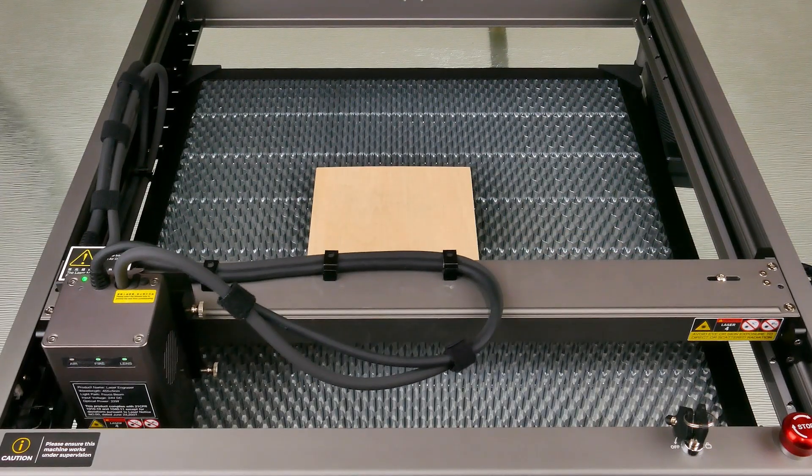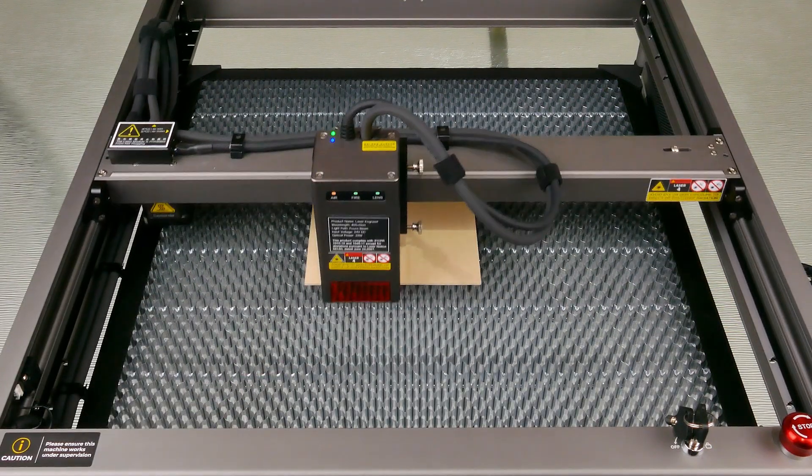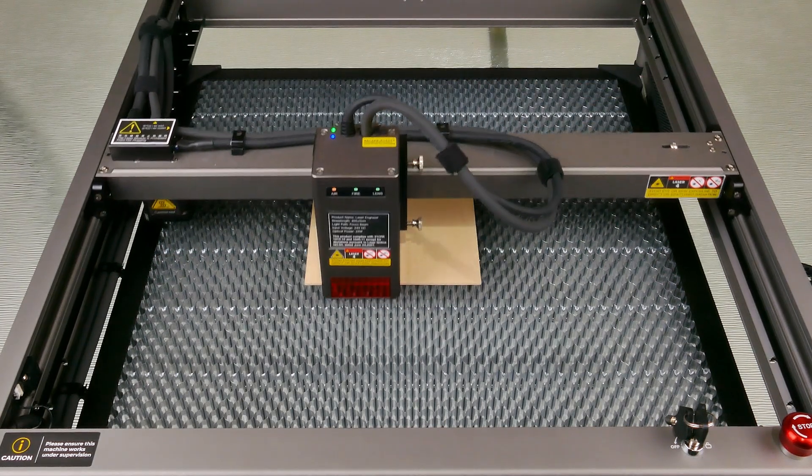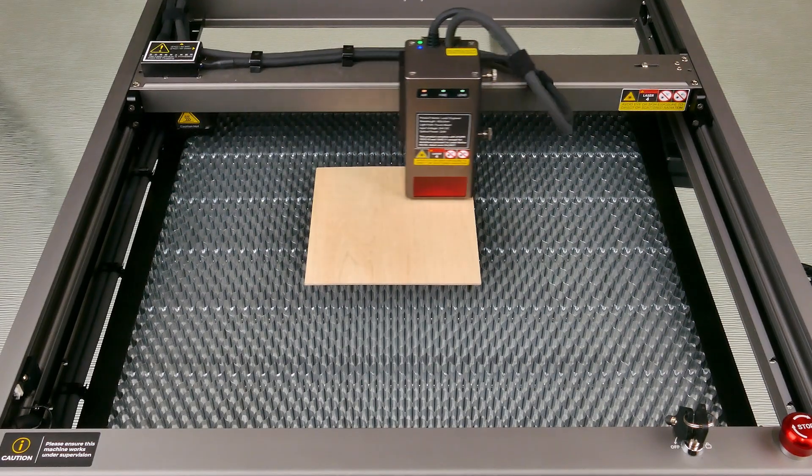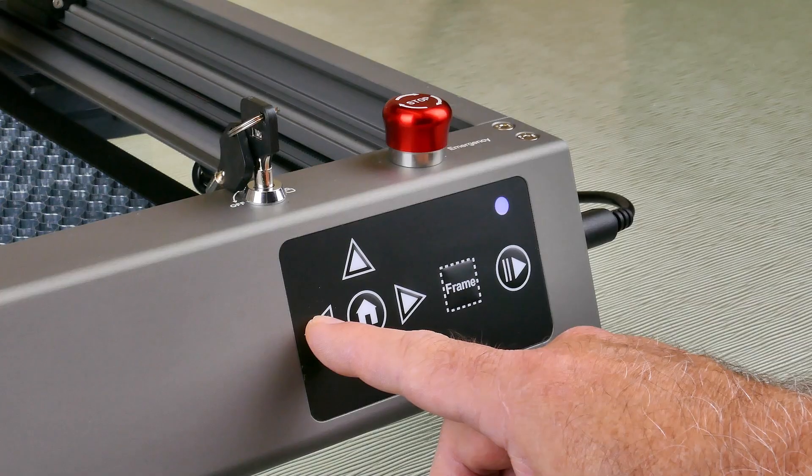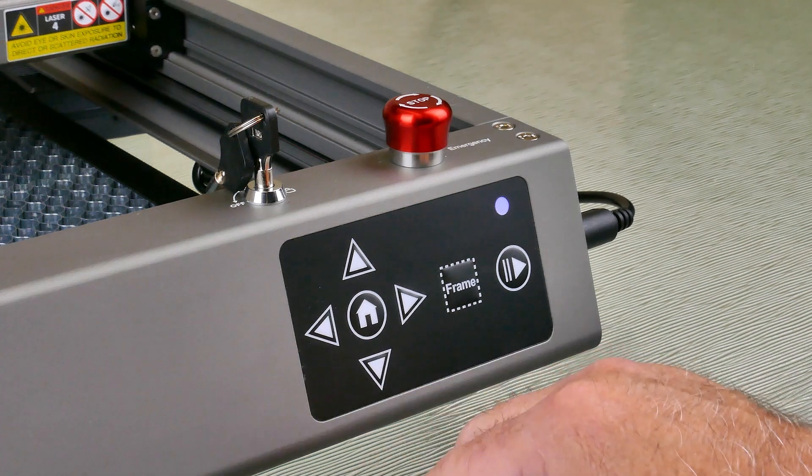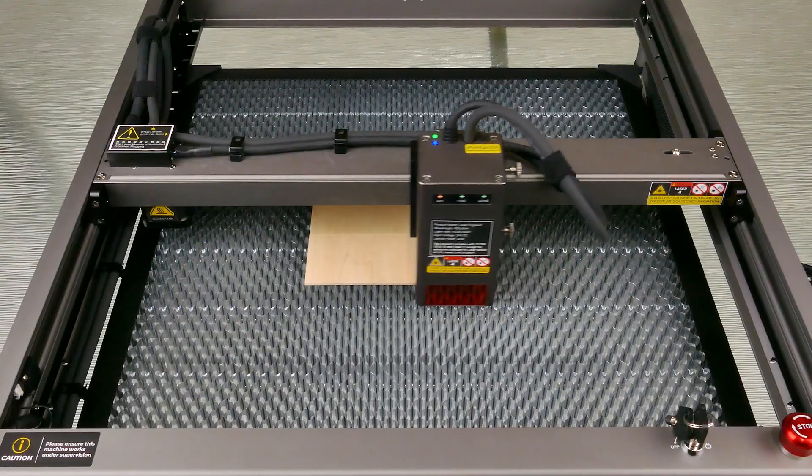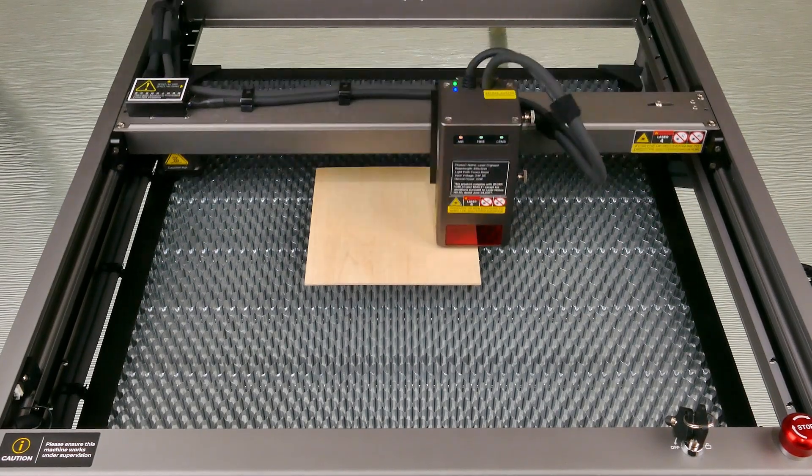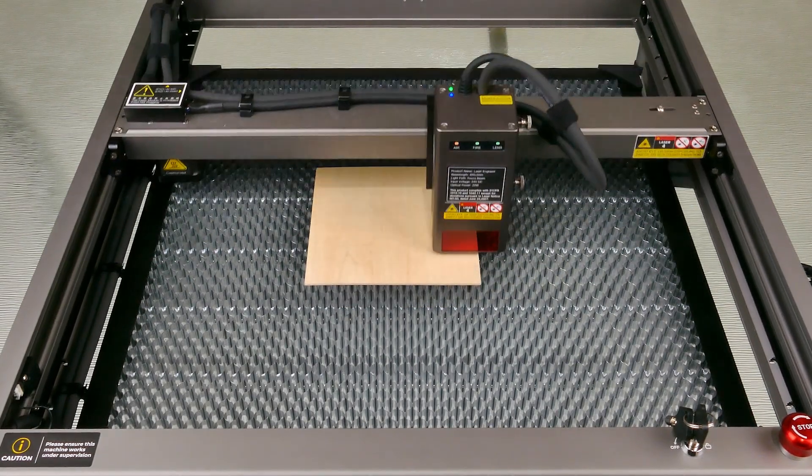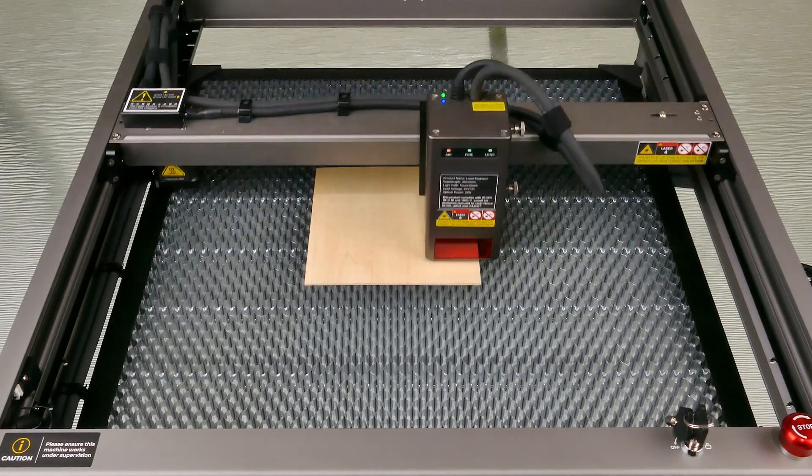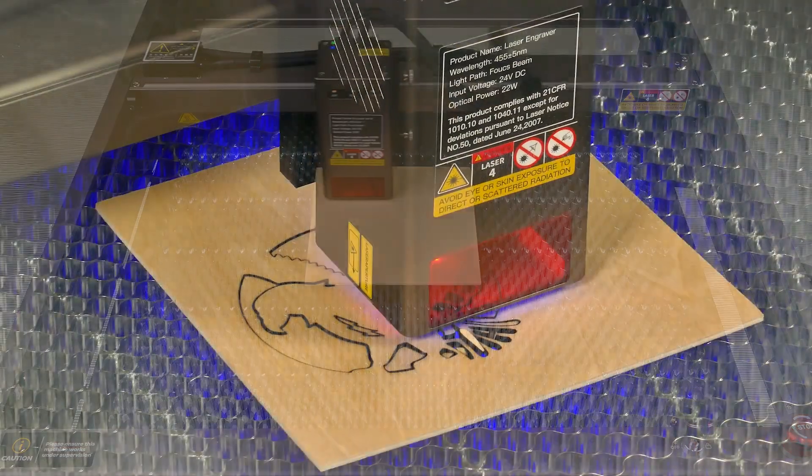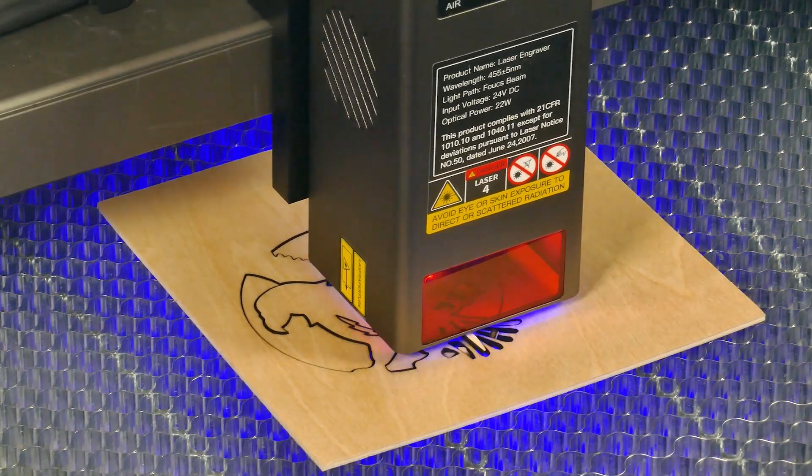The laser is then sent to approximately where the image will be created and the laser will then continue going in a square until you hit the play button. But before you do that you can make adjustments so it centers it properly by using the arrow buttons. You can center the laser properly onto the piece of timber and you can see it's slightly moving over to the left. Once I'm happy with that you hit the play button and it starts doing your job.